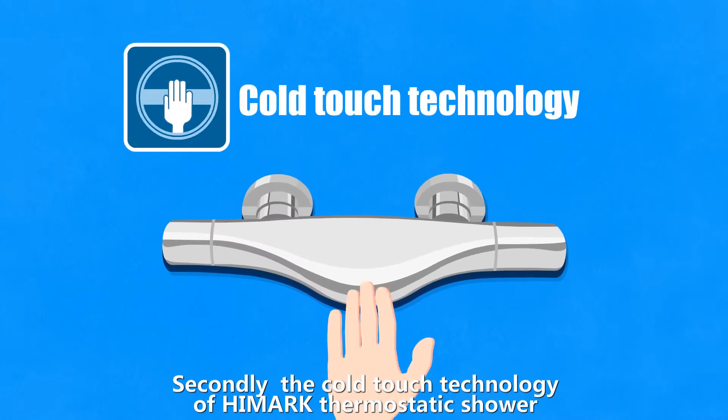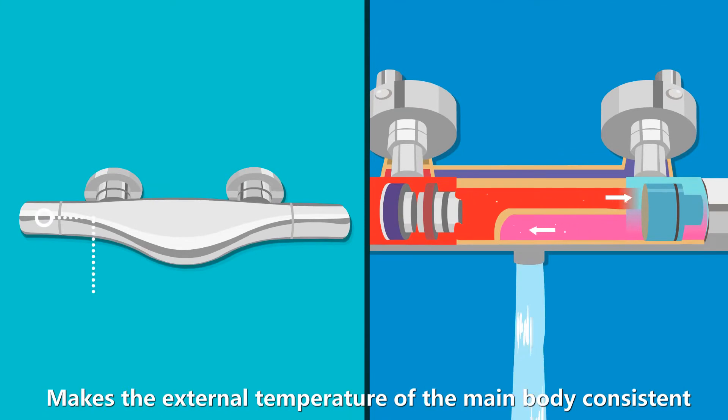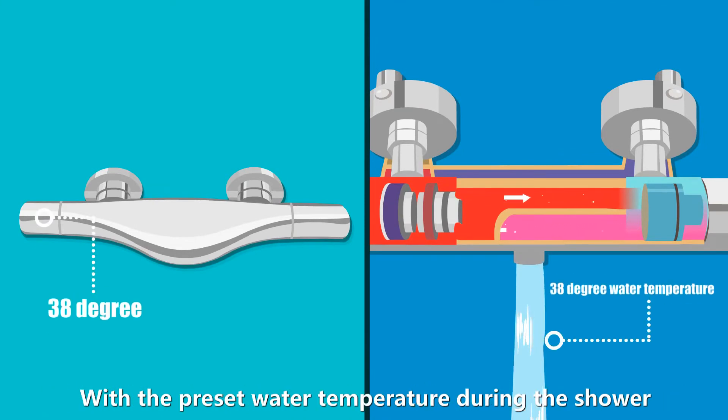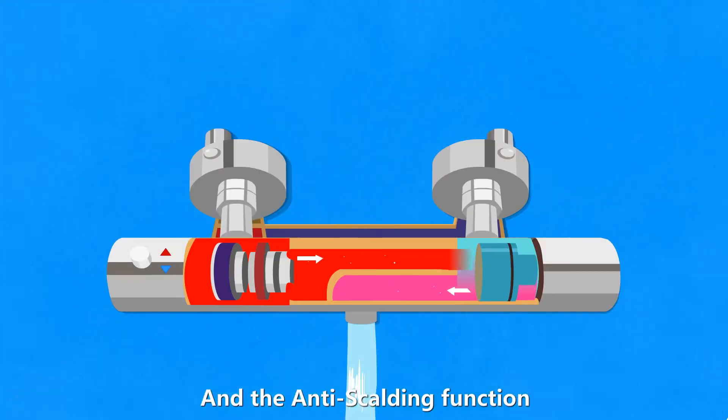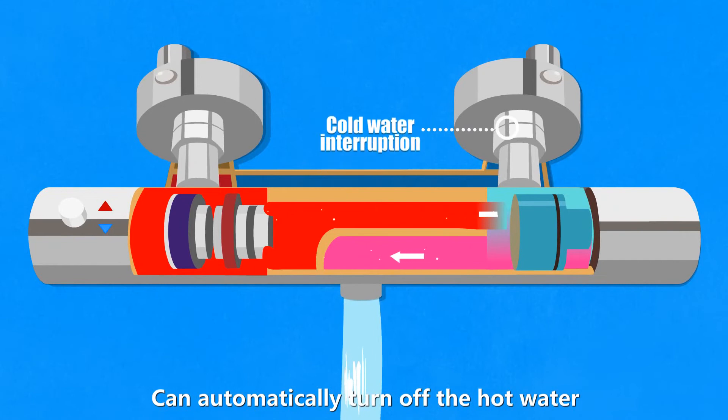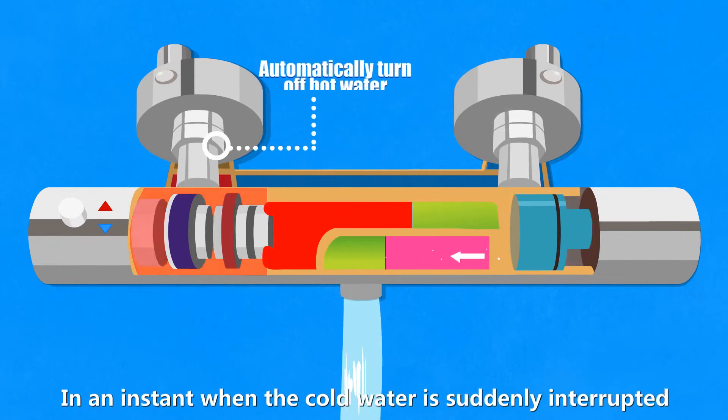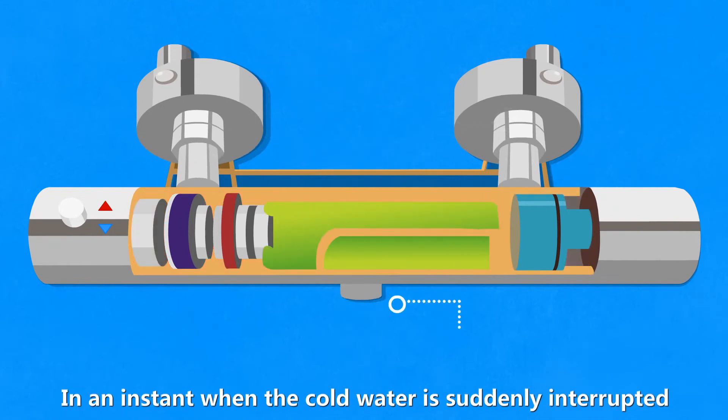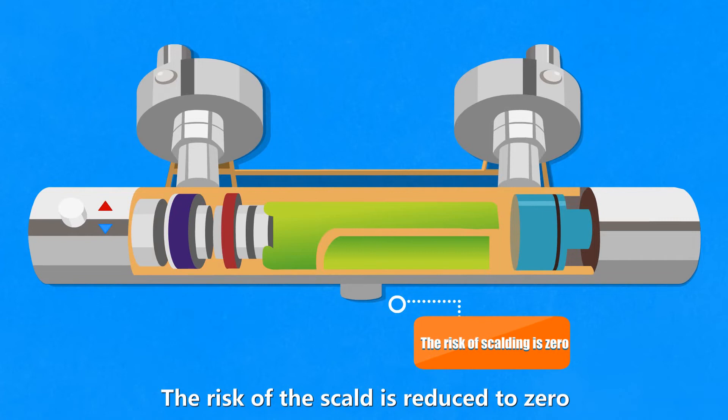Secondly, the CoolTouch Technology of Highmark thermostatic shower makes the external temperature of the main body consistent with the preset water temperature during the shower. The anti-scalding function can automatically turn off the hot water instantly when cold water is suddenly interrupted, reducing the risk of scalding to zero.